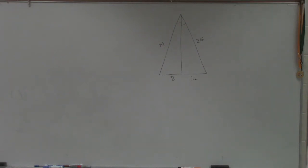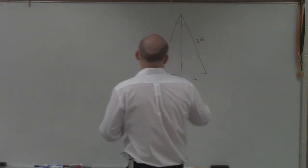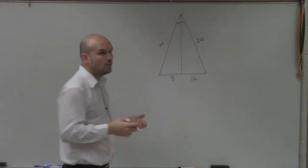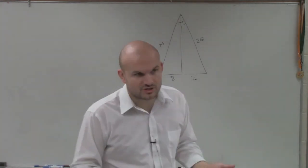What the triangle angle bisector theorem stated was when we have an angle bisector, this line bisects that angle. What that now states is two proportions.